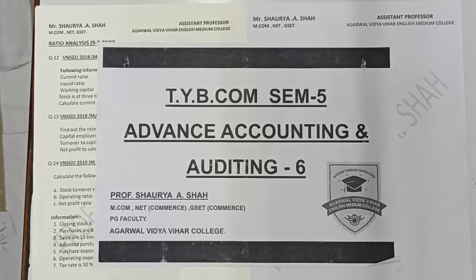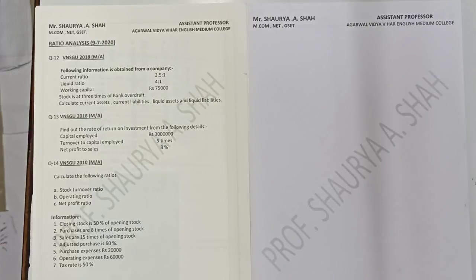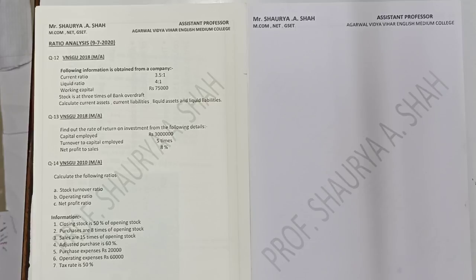In the last lecture we started with the university sums of your ratio analysis chapter. Again today we will be solving a set of university sums only. These are the mixed sums from the paper of VNSU 2018, 2010, and 2013. I hope everyone has understood the sums in the last lecture and I suppose there are no queries. Today we'll be moving further — I hope everyone is very familiar with the chapter and clear with the formulas.